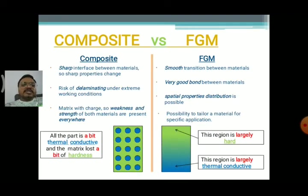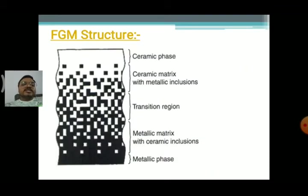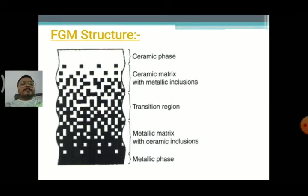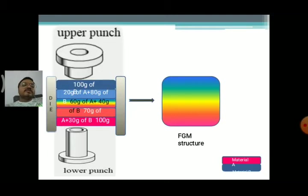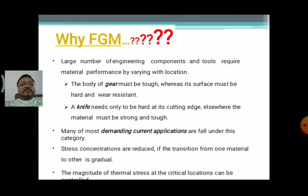We have also seen the difference between composites and FGMs, and discussed the FGM structure — starting with the ceramic phase and ending with the metallic phase, and what are the inclusions in the transition region and in the matrix region. We also saw about the upper punch and lower punch die in the FGM structure, including the multicolor layer region, and why we are using FGMs.